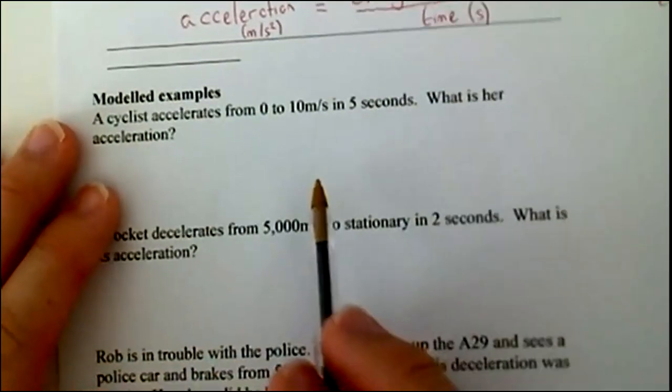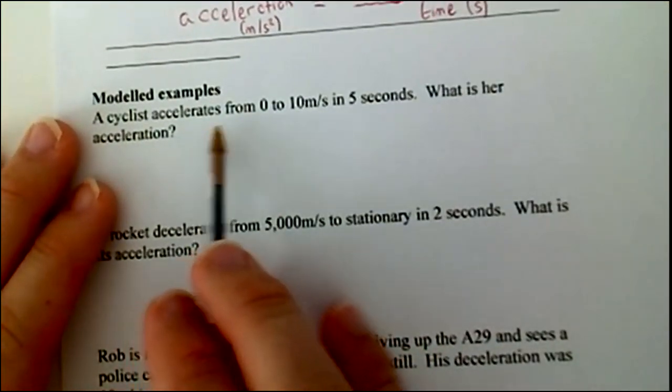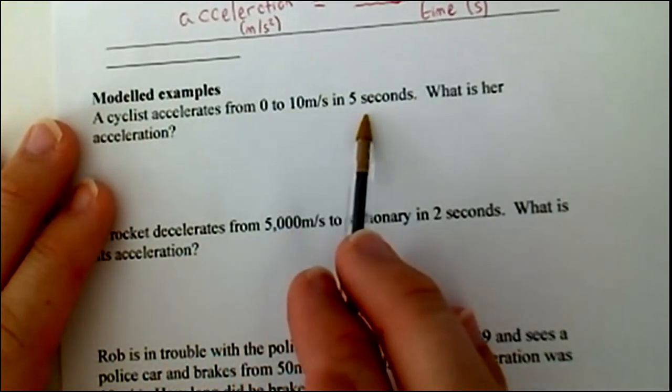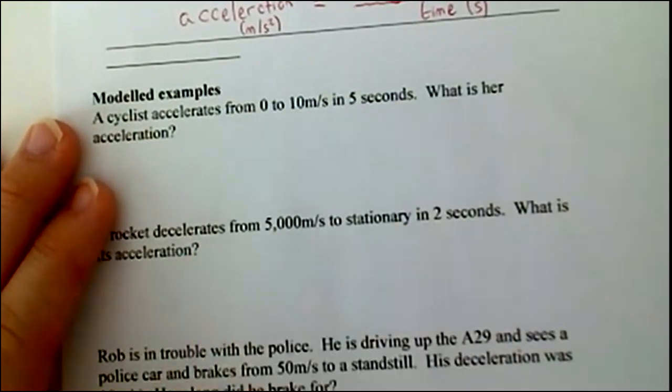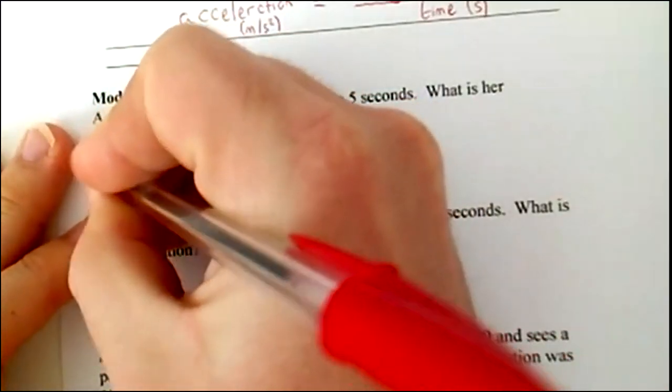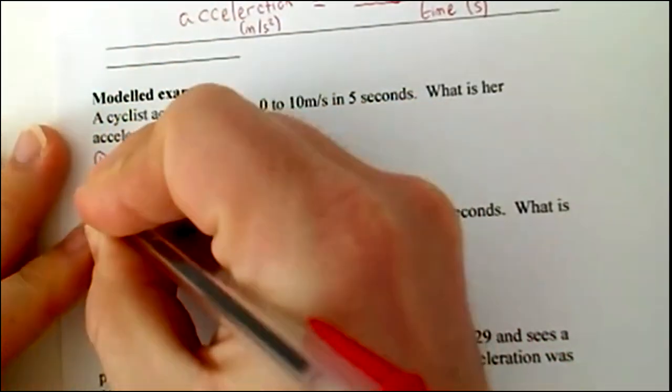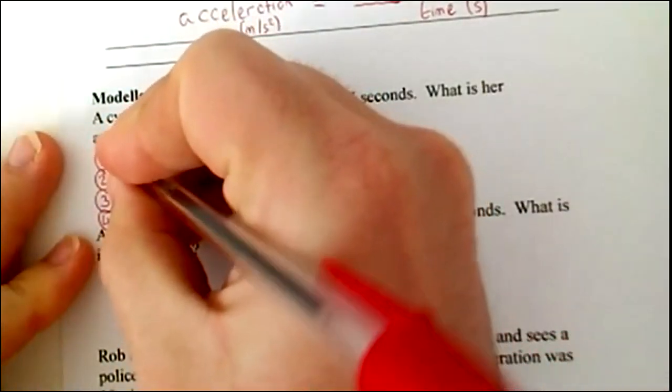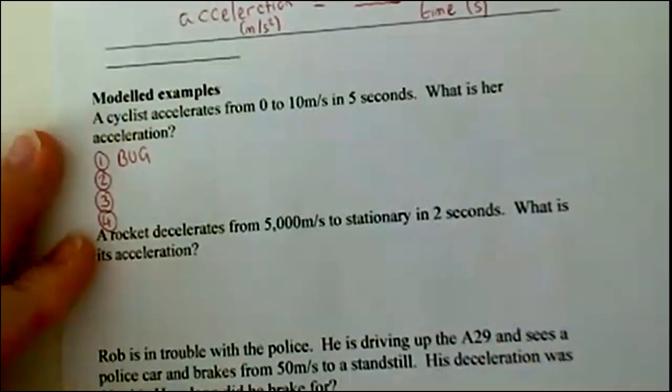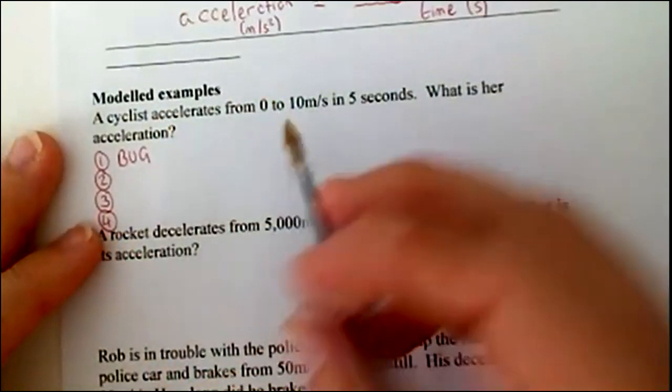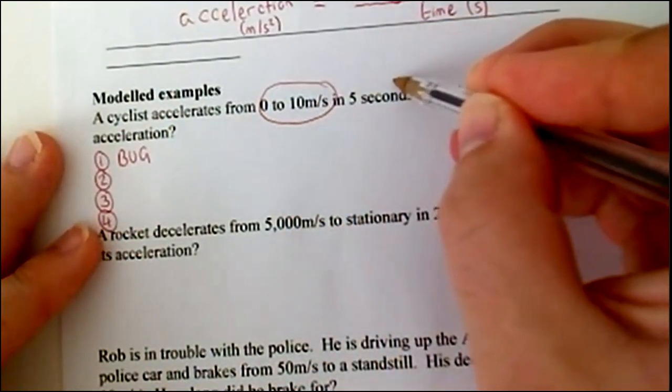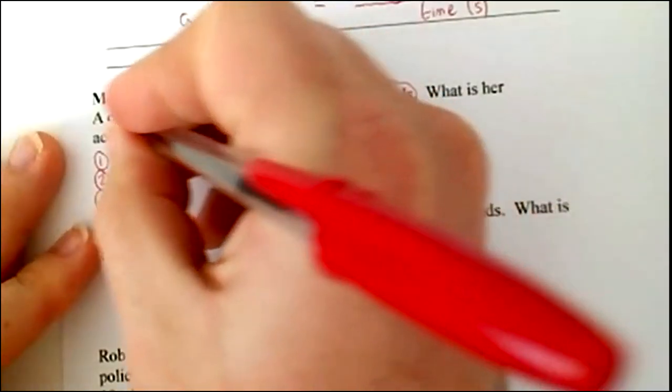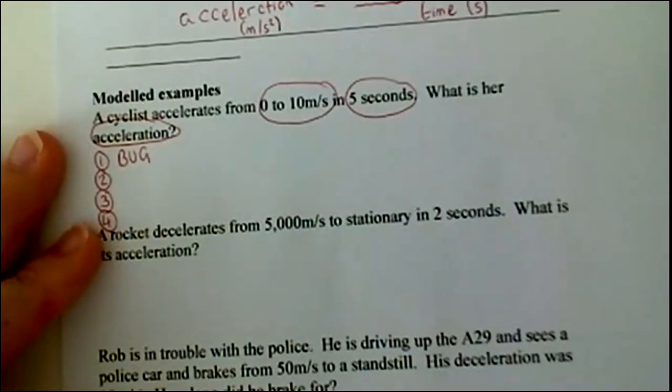So, the first question is here. If a cyclist accelerates from zero to ten metres per second in five seconds, what is her acceleration? Now, you should actually remember from lesson one, my four top tips. So, step one is bug. That's bug the question. So, again, we're going to do it together now. So, I'm going to bug it. So, I can see I've got this, this, and I want to find out that. So, bug the question.